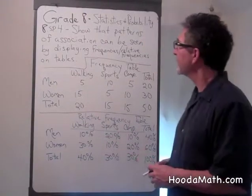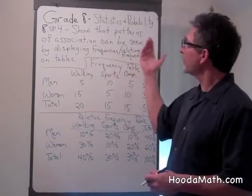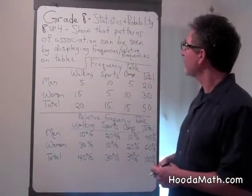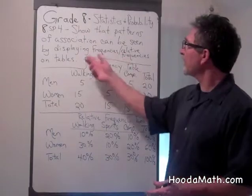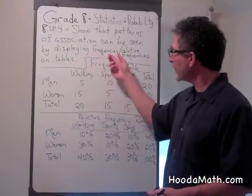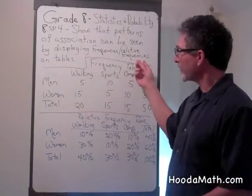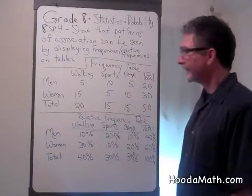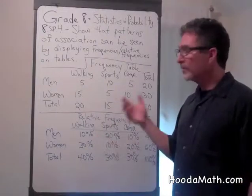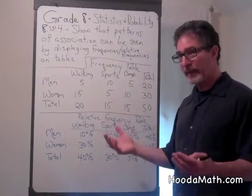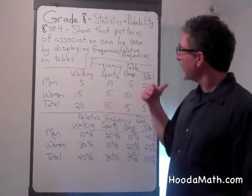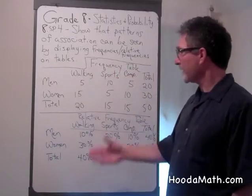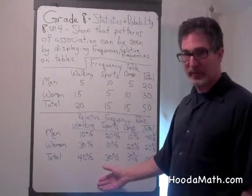In this lesson, I'm going to show that patterns of association can be seen by displaying frequencies and relative frequencies on tables. I'm going to use the same data, but I'm going to present it as a frequency and as a relative frequency.